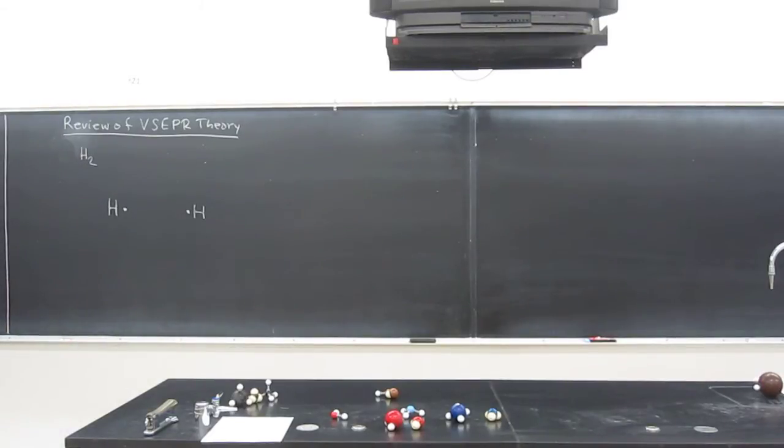Noble gas configuration. Yeah, they get a noble gas configuration, right? Or their whole valence shell is filled. That's another way of saying that. So is hydrogen's valence shell filled if it's just a hydrogen atom? No. How many electrons does it need? Two. Which means two, right?